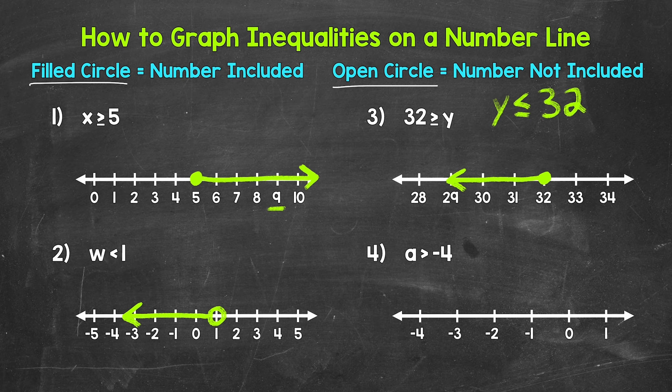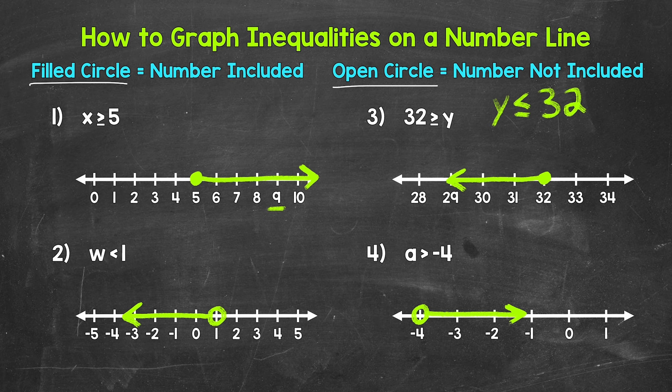Lastly, let's move on to number 4, where we have a is greater than negative 4. Let's start at negative 4. Negative 4 is not a solution — it's not included. So we need an open circle at negative 4. Now we need to draw an arrow pointing to the right, the direction of all of the numbers greater than negative 4. The open circle is showing that negative 4 is not included, and then the arrow is representing all of the numbers greater than negative 4. All of these are our solutions.